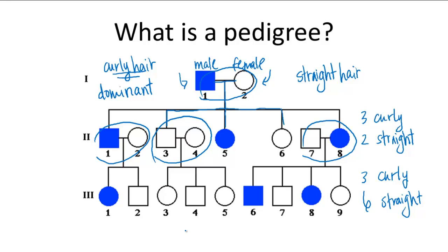So it seems like those that have straight hair just don't have the allele for curly hair. So it's most likely that curly hair is dominant and masks straight hair.